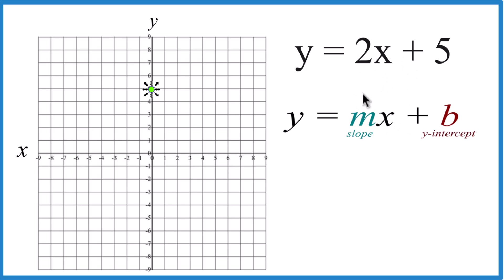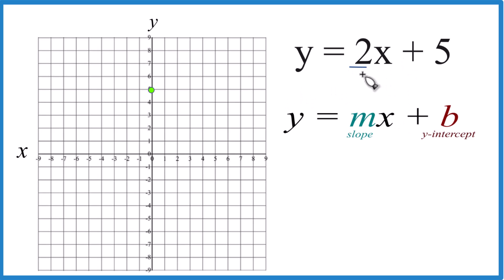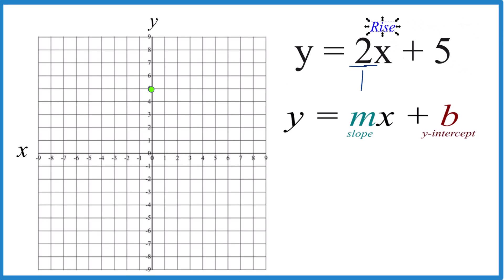Now, for m, m we have 2, but it's helpful to think about this as 2 over 1, because now we can call it rise over run. So we go to our y-intercept here, we're going to rise 1, 2, and we're going to run 1.